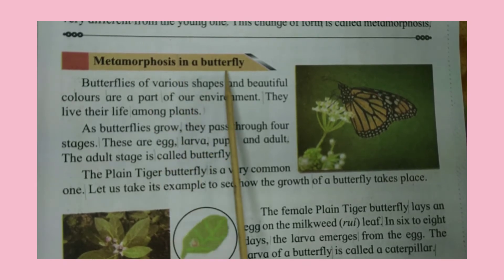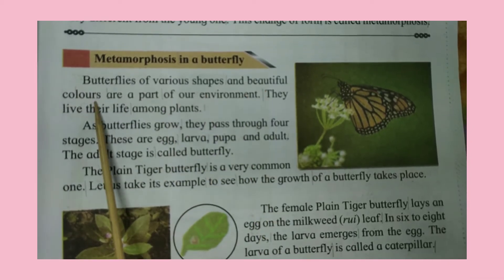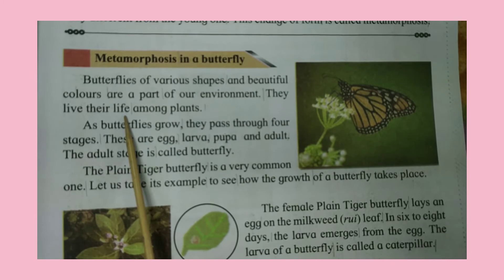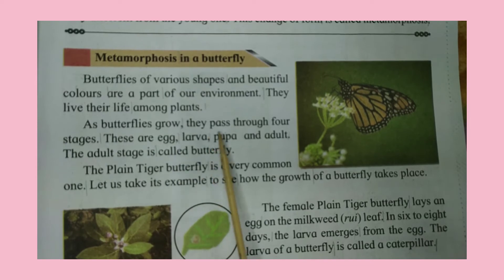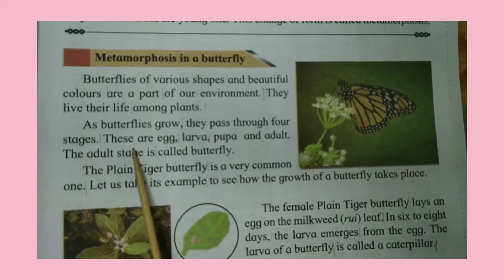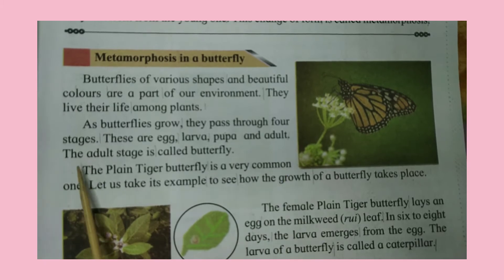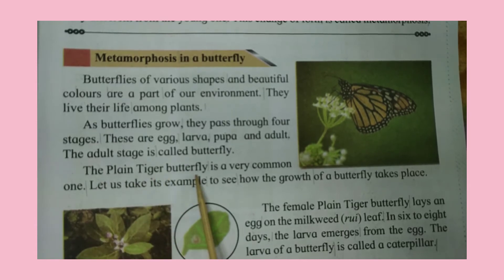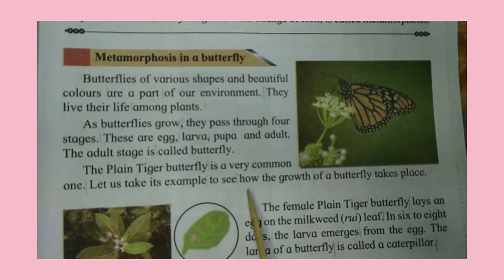Metamorphosis in a butterfly. Butterflies of various shapes and beautiful colors are a part of our environment. They live their life among plants. As butterflies grow, they pass through four stages. These are: Egg, Larva, Pupa, and Adult. The adult stage is called Butterfly. The Plain Tiger Butterfly is a very common one. Let us take its example to see how the growth of a butterfly takes place.